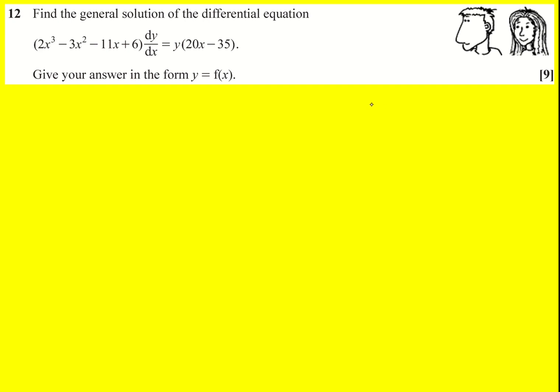Right, well first up, we need to separate variables, get the function of y on the left with dy by dx and set it equal to a function of x on the right because then we can integrate both sides with respect to x. We'll get to that in a bit because there's actually quite a lot more to do before we do that.